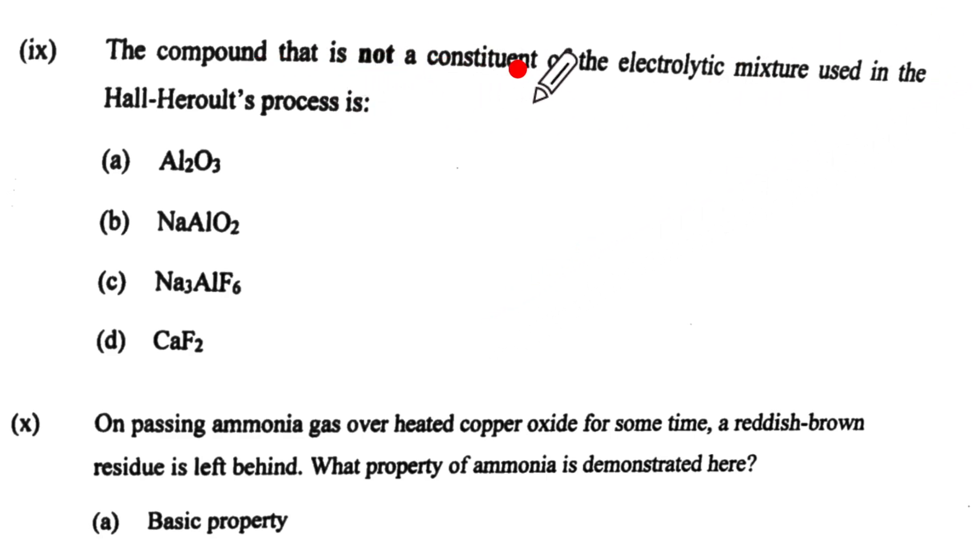The compound that is not the constituent of the electrolytic mixture used in Hall-Herald's process. So we have this, this and this. These are the main components of the Hall-Herald's process electrolyte but what we do not have in electrolytic mixture is NaAlO2. So the correct option is B. So ninth correct option is B. Which one it is? Sodium Aluminate. Okay.